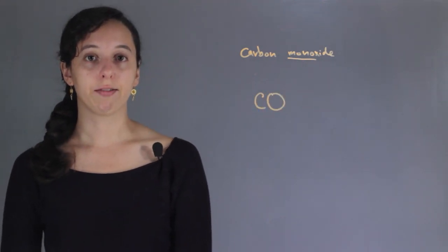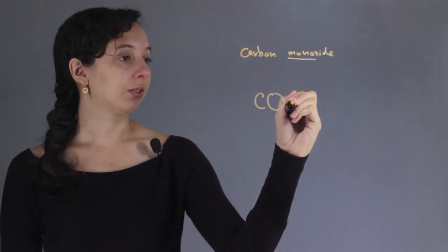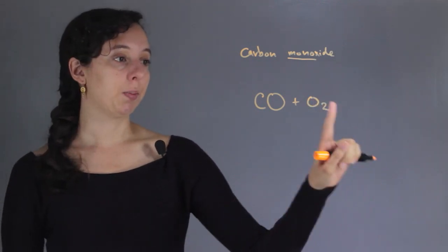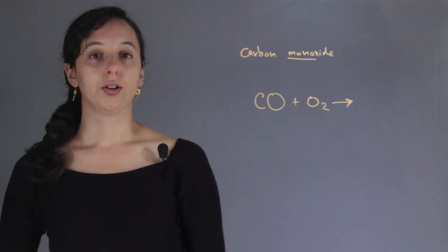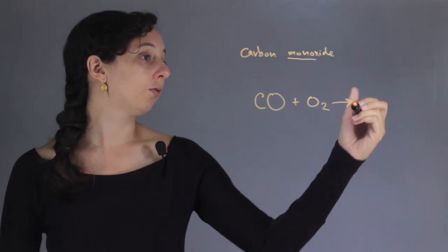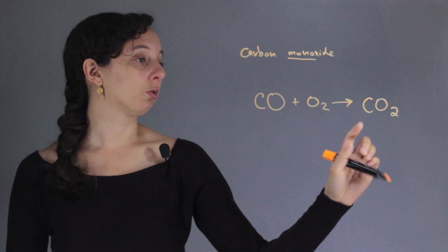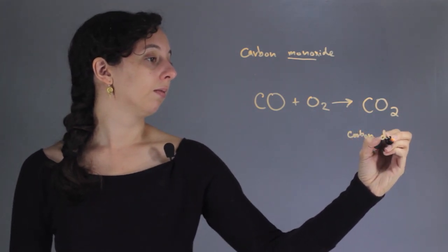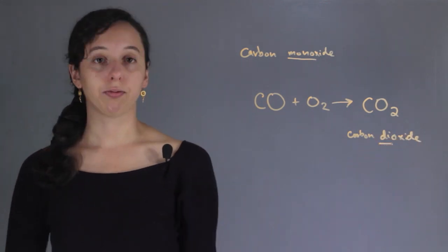Now, we know we're going to have carbon monoxide undergo combustion, which means that it reacts with oxygen gas — it's actually just air, this is the part of air that reacts. So now we have to find our product, and combustion reactions always combine to form carbon dioxide. You can see the difference — carbon dioxide, the prefix di- means two, so we have two oxygens.